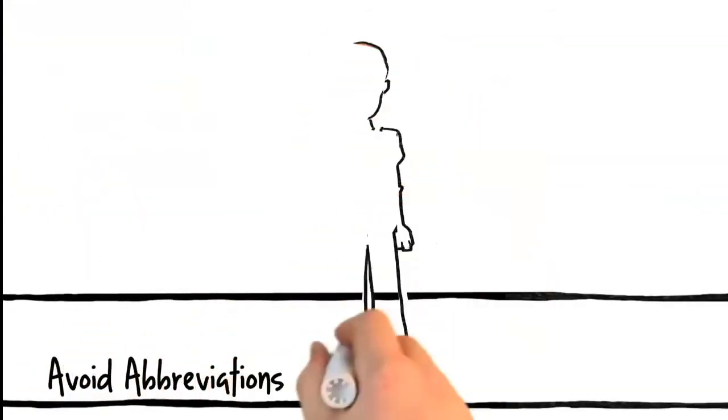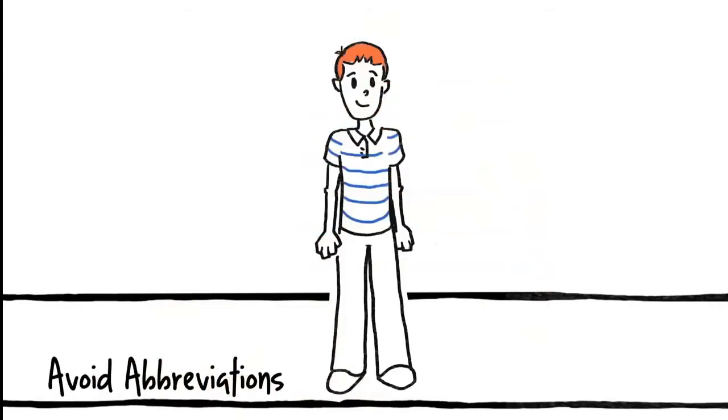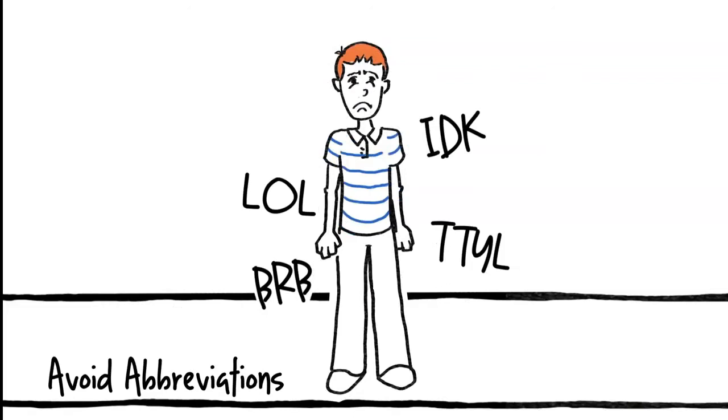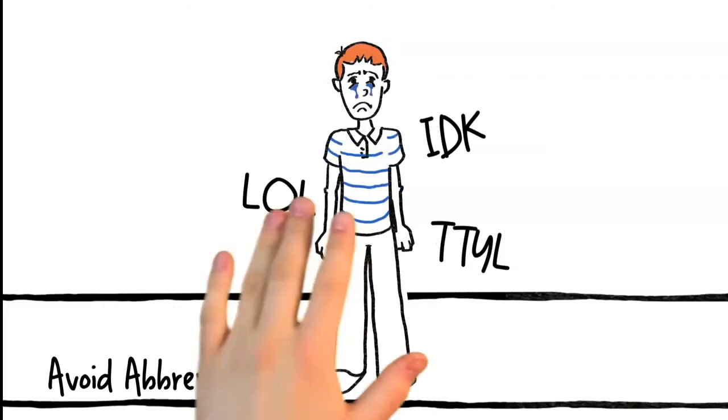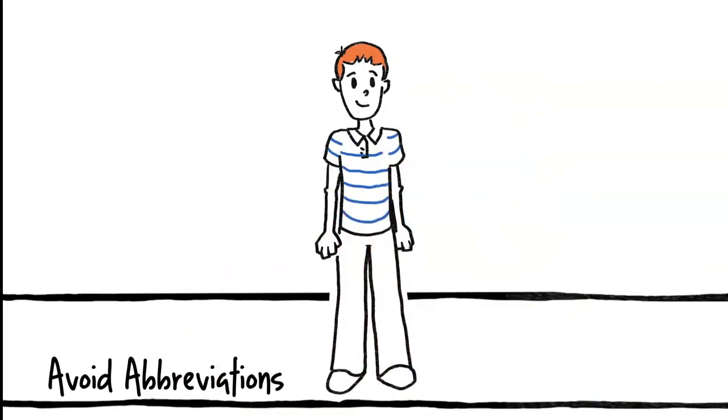First, avoid abbreviations that you might use when texting or on Facebook, like talk to you later, laugh out loud, or other abbreviations. Not everyone knows what these mean, and even if they do, avoiding them will help communicate more clearly what you really mean.